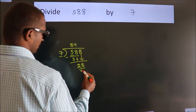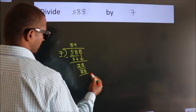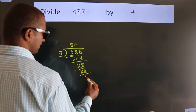7 times 4 equals 28. Now we subtract. We get 0.